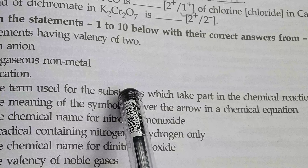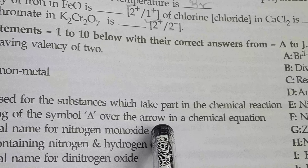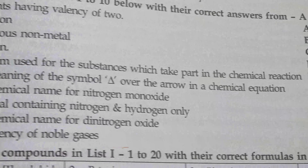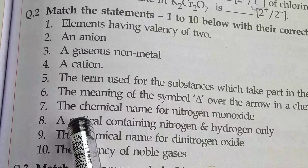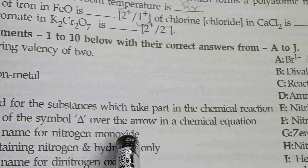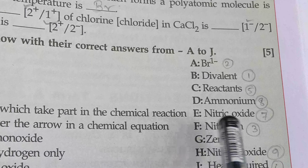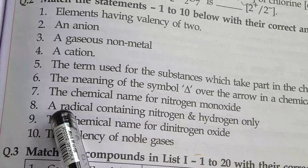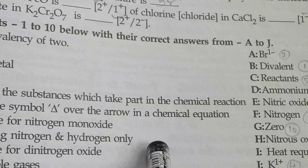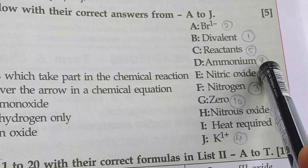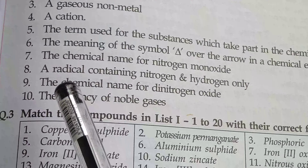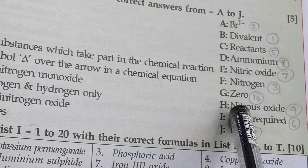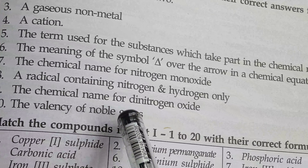Carefully, we can see the valency of 2. Next, an anion — anion means Br 1 minus, it means a negative ion. A gaseous non-metal — that is nitrogen. Next, a cation — a positive ion — K 1 plus. Next, the term used for the substances which take part in a chemical reaction — all of you know — reactants.